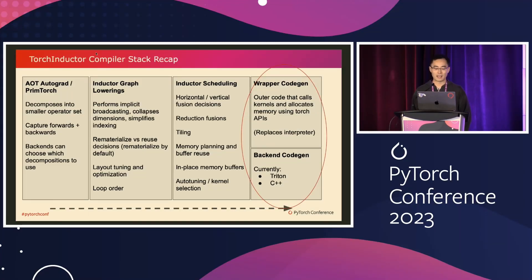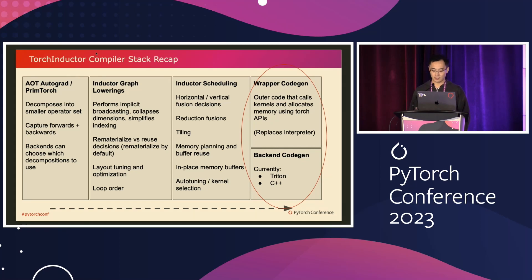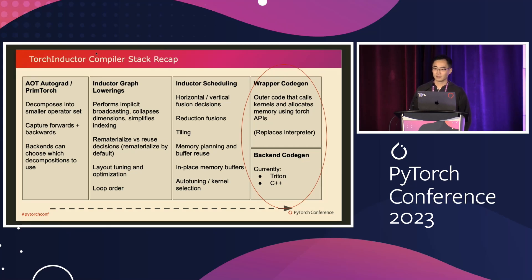I took this slide from last year's Torch Inductor tutorial as a quick recap of Inductor's stack, and to highlight what we need to handle differently for AOT Inductor. Roughly speaking, from left to right is the order of different Torch Inductor components. The one on the left does input normalization. After that, we have IR lowering and optimizations. Towards the end, we have code generation. Comparing to the default JIT mode, what do we need to build differently for AOT Inductor?